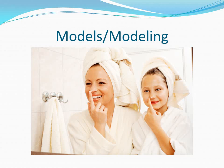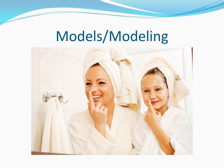Modeling is demonstrating a behavior from another person, or observing and imitating another person's behavior. An effective model is typically competent, has prestige and power, and their behaviors are relevant to the learning circumstances. For example, a high school basketball player may model their behavior after LeBron James. Successful modeling requires attention, retention, motor reproduction — actually having the ability to do what you're modeling — and most importantly, motivation, which is continuously trying to do that thing you're modeling.